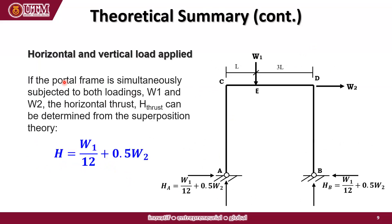If the portal frame is simultaneously subjected to both a vertical load W1 at E and a horizontal load W2 at D, the horizontal thrust can be determined from the superposition theory. Therefore, the horizontal thrust equals W1 over 12 plus 0.5 times W2 — where W1/12 is the contribution from the vertical load and 0.5 × W2 is from the horizontal load.